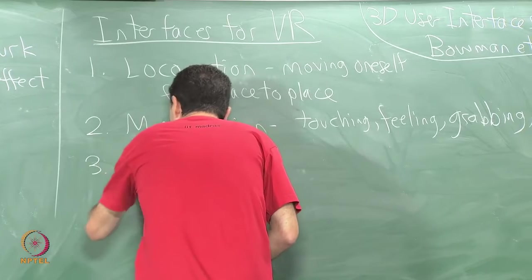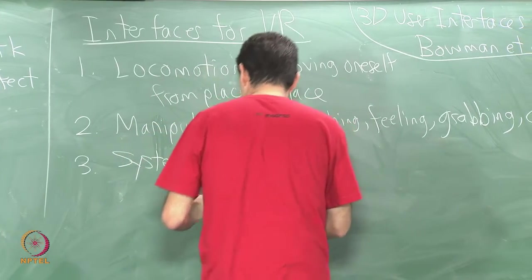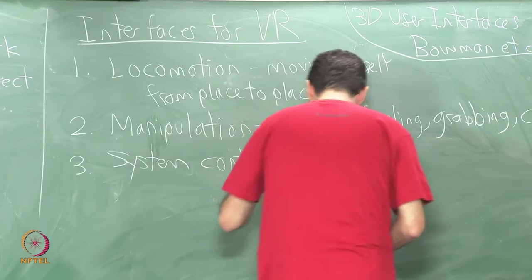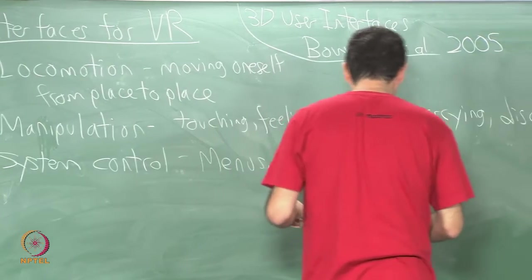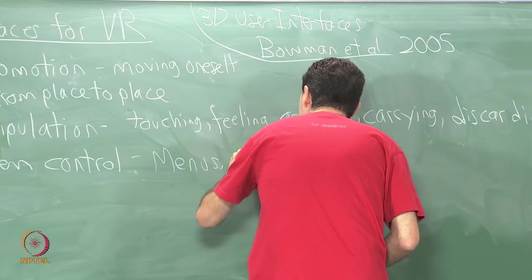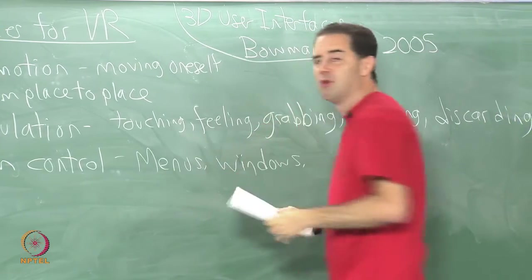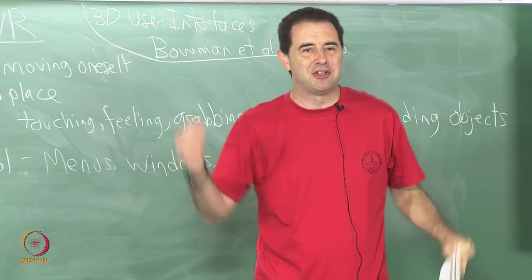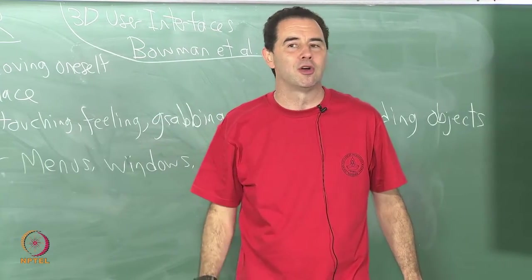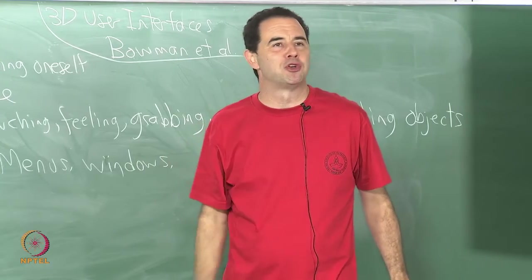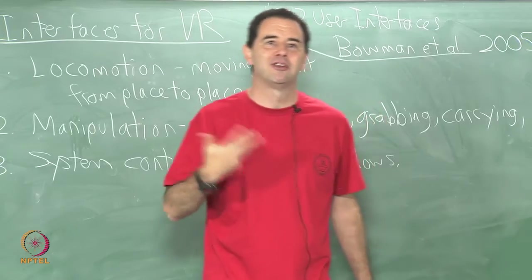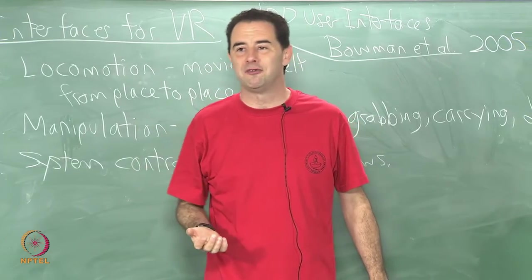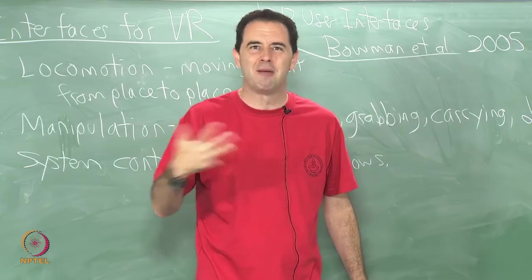Another category is system control. Just standard, how should menus look? How to select in menus? Do we want some kind of windows? In other words, what is the replacement for the desktop? We have a desktop with windows and icons and we do our work. Our smartphones have some sort of version of that with a touch screen, again we have icons and we open them up and we do various things. So what should the system control look like exactly? How do we interact and just do our work in a virtual reality environment?